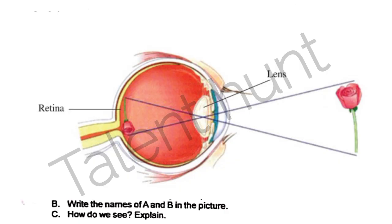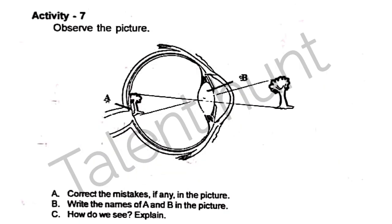In the retina, the image is inverted. Write the names of A and B. How do we see? The image formed on the retina is taken by the optical nerve to the brain. Our brain has the ability to control the vision. It gives the erect nature of the object to us.